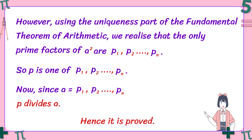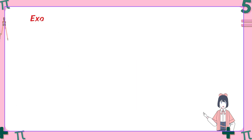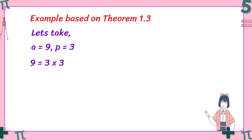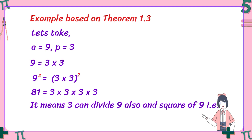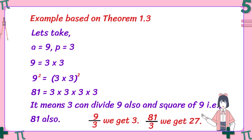To bring more clarity, let's take an example. Let a = 9 and p = 3. The prime factors of 9 are 3 × 3. Squaring 9 gives 81, which equals 3 × 3 × 3 × 3. This means 3 can divide 9 — since 9 divided by 3 is 3 — and also 3 can divide 81, since 81 divided by 3 is 27. This is the practical application of Theorem 1.3.